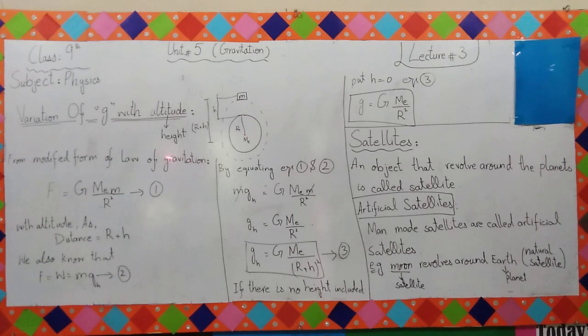From the modified form of law of gravitation, you read the law of gravitation, which was the modified form. So this means that F is equal to G, M, E, M over r square. This is your equation number 1.